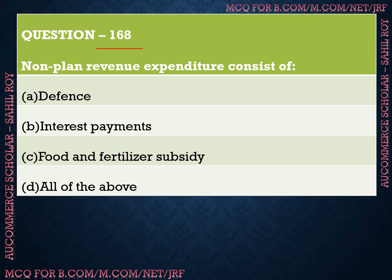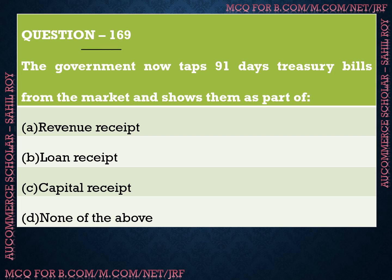Question number 168: Non-plan revenue expenditure consists of? Plan revenue expenditure is that which falls under the five-year plans, while non-plan revenue expenditure covers all expenditure not included in plan expenditure. We have four options: Option A is defense, Option B is interest payments, Option C is food and fertilizer subsidy, and Option D is all of the above. The correct answer is Option D — all of the above. Non-plan revenue expenditure consists of defense, interest payments, and food and fertilizer subsidy.